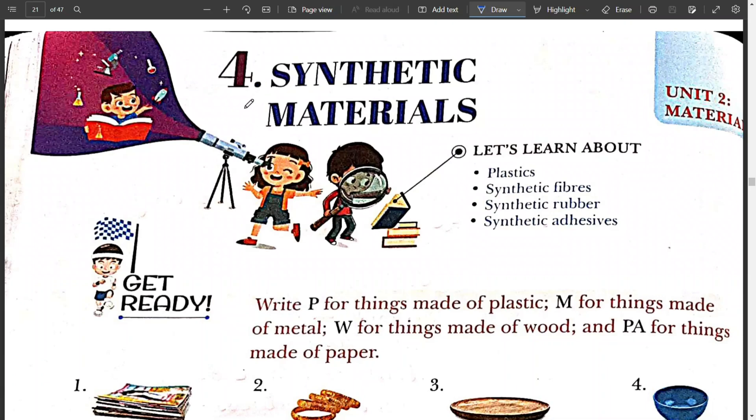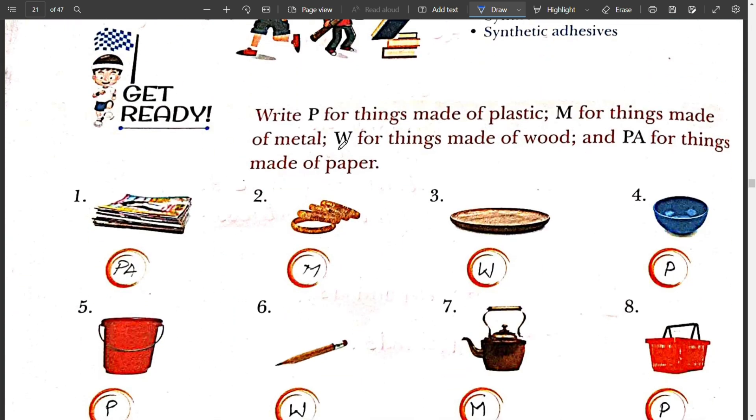Hello Bacho, in this chapter we are going to solve the book exercise of chapter 4, that is synthetic material. The very first get ready exercise is given there. In this exercise we have to write P for the things that is made up of plastics, M for the things made up of metals and W for the things made up of wood and PA for the things made up of paper.